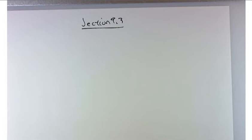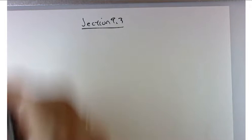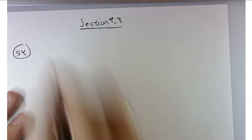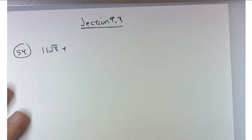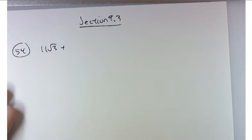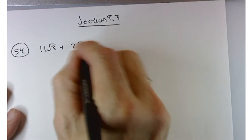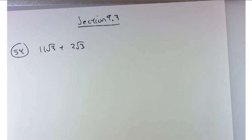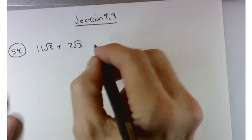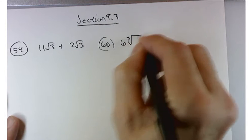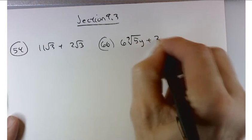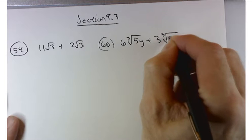Warm up and get back into these sections. Let's try two problems starting with problem number 54 which is 11 times the square root of 3 plus 2 times the square root of 3, and then likewise problem number 66 which is hinting at things to come working with cube roots, so 6 times the cube root of 5y plus 3 times the cube root of 5y.